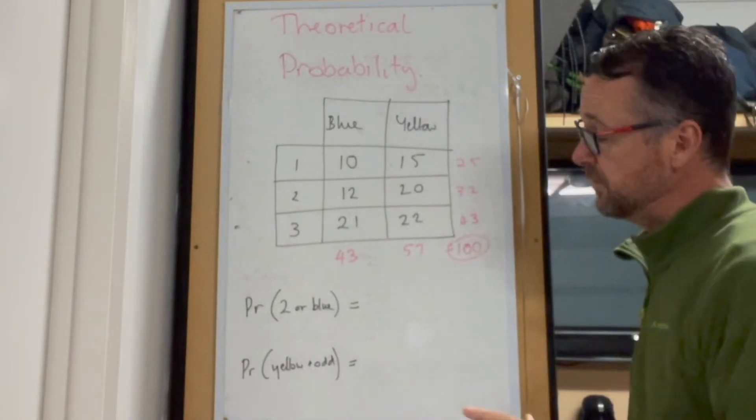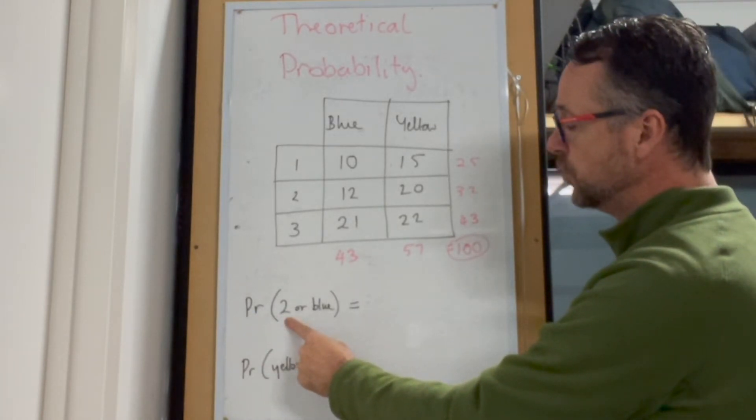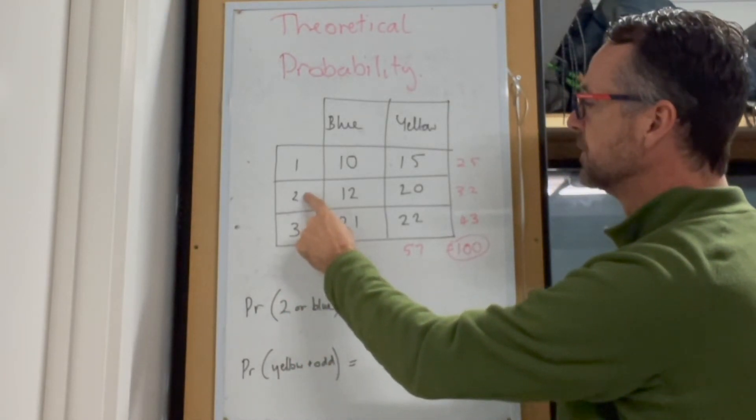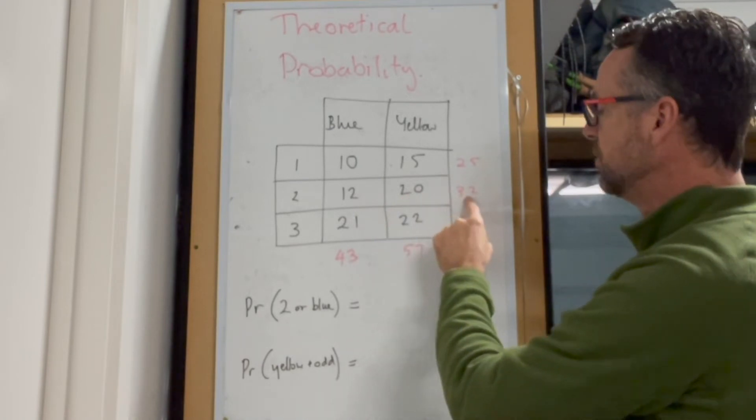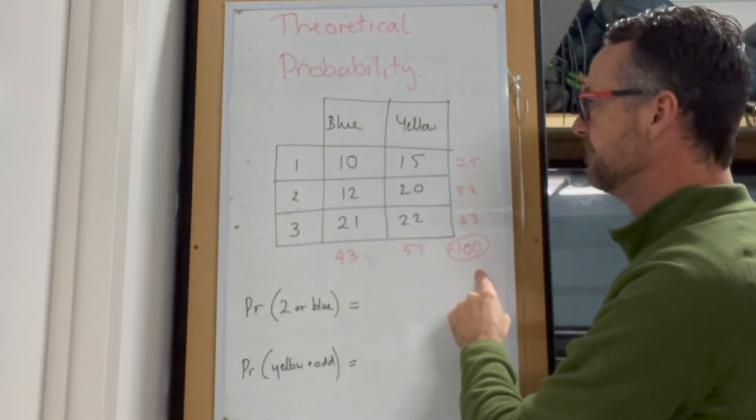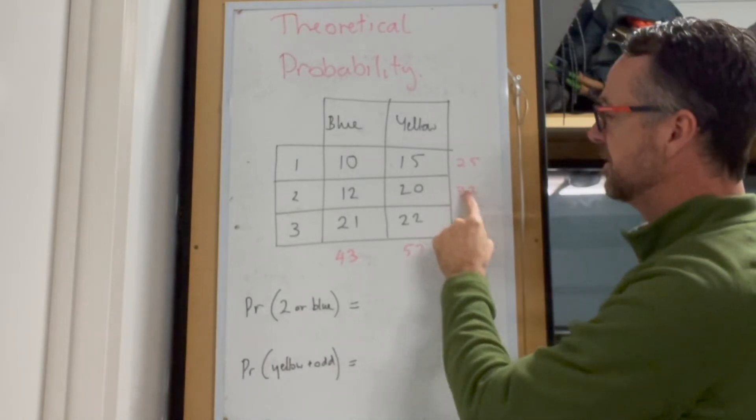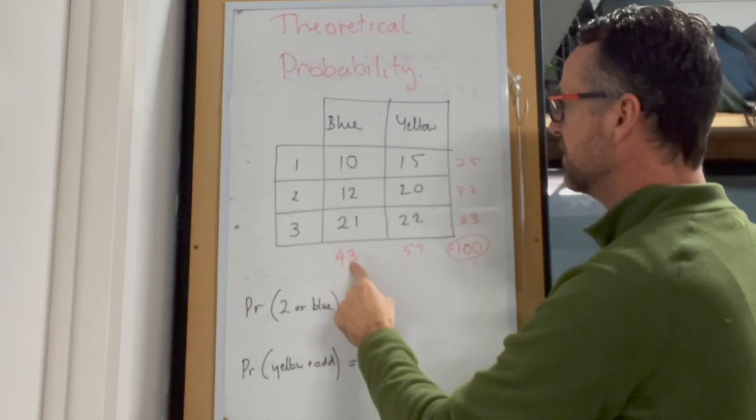Okay, so let's have a look here. We've got two questions. The first one is, what's the probability of a counter being 2 or blue? So it could be 2 or blue. So the chance of it being 2 is 32 out of 100. And so there's going to be those ones now, or blue, which is 43 out of 100.